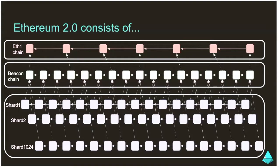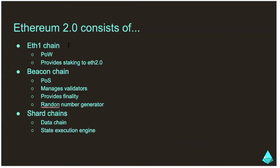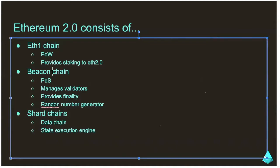The whole Phase Zero is essentially building out this beacon chain. This is so important because it's the fundamental of the proof-of-stake protocol — the fundamental of what ETH2 is. Without the beacon chain, nothing will happen; there wouldn't be any user data, there wouldn't be any execution. ETH2 consists of the ETH1 chain, which is what we have today, and then the beacon chain, which is what we're building. It's proof of stake, it manages validators, it provides finality, it has a random number generator, and it does a lot more things. And then you have shard chains, which are Phase 1 and Phase 2.